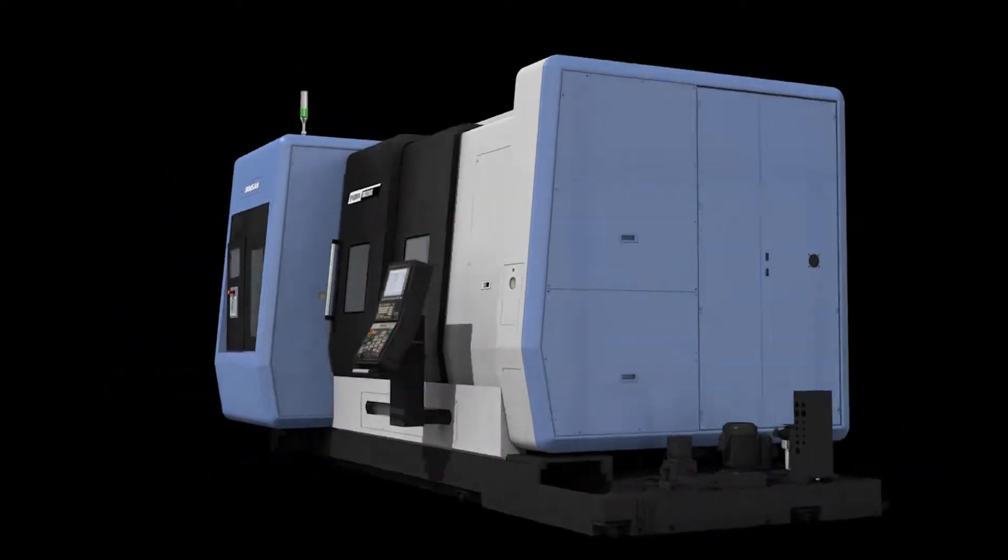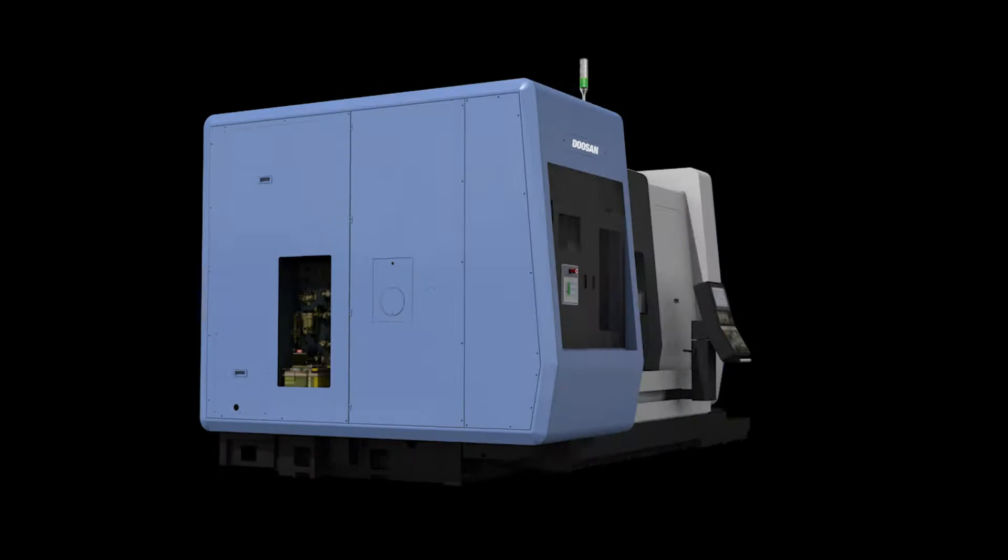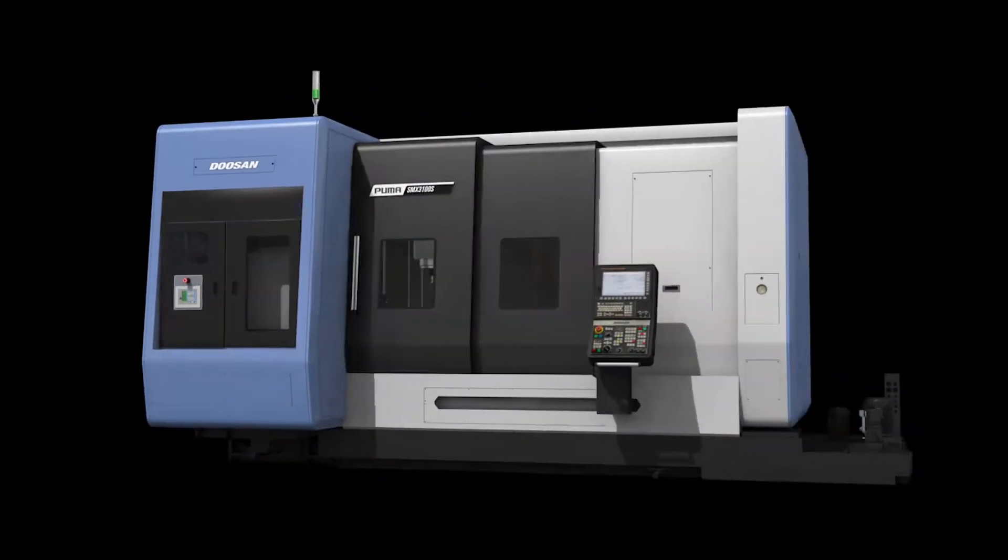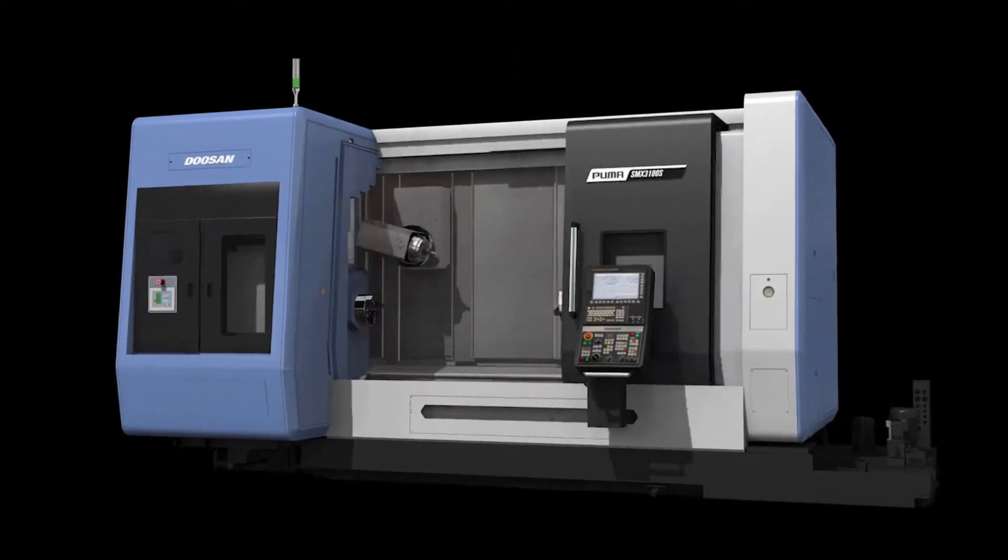The adoption of an orthogonal B-axis structure has expanded the machining area, improved productivity, and increased the operator's work area, thereby boosting the operator's convenience.